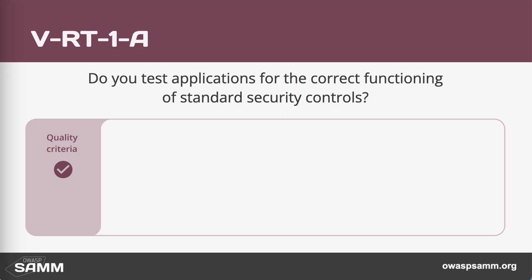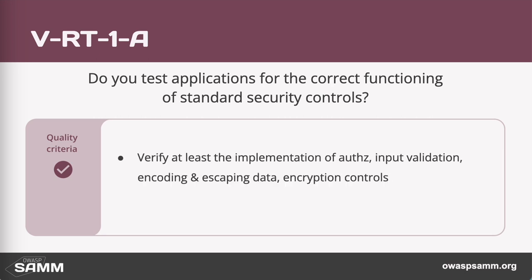Level one is where you've identified the security controls and requirements and you are testing those. At this level, the model expects you to do this on an ad hoc basis. For instance, the QA team could go through these things manually. Frequency is at least whenever the application changes the use of some of the controls.